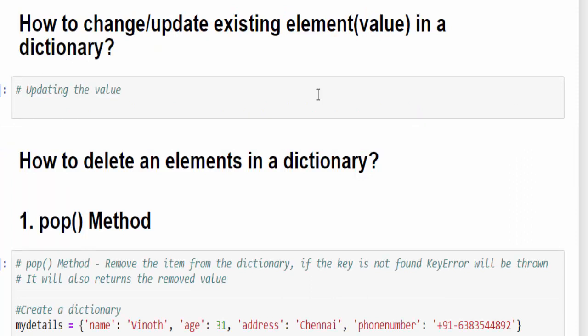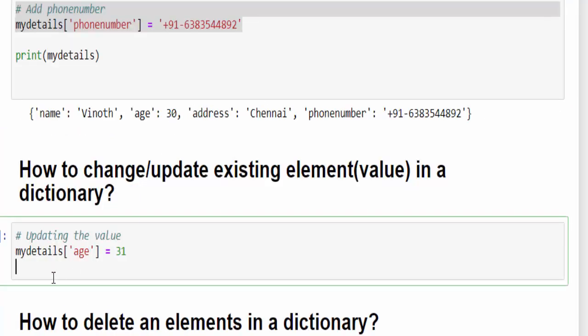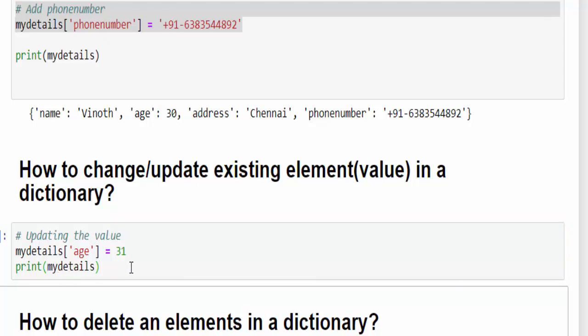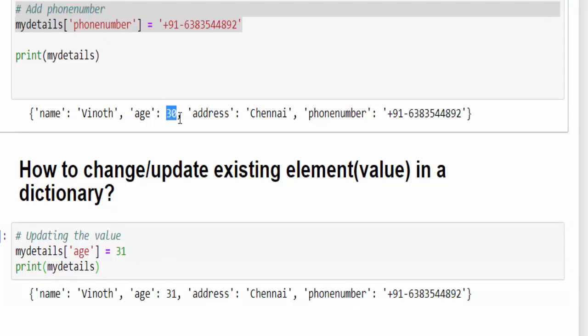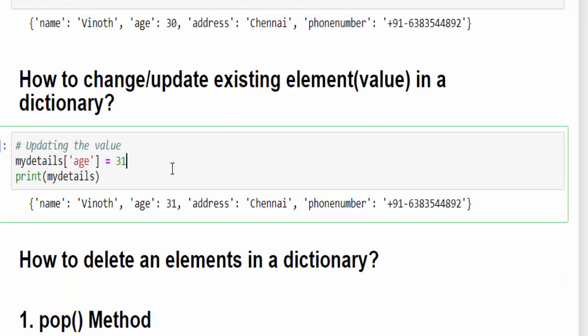Next topic: how to update the value? Because adding a value means it will add at the end. How to update or change an existing value? Now we'll see. My details within square brackets, mention the key. We know the key is age, and what is the value? Value I am making it as 31. Initially the age is 30, now I am updating it to 31. Print the dictionary variable, executed. Previously it was 30, now the value is updated to 31. Hope you got a clear picture. Conclusion is: adding and update is the same syntax. If the key is not available, the new value will be added. If the key is available, the new value will be updated.